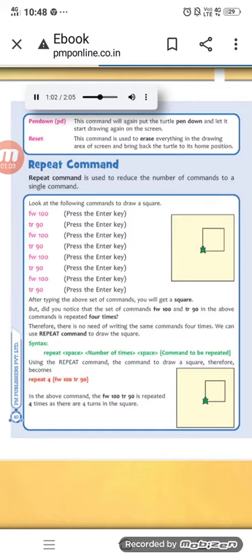Square, but did you notice that the set of commands FW100 and TR90 in the above commands is repeated four times? Therefore there is no need of writing the same commands four times. We can use repeat command to draw the square.